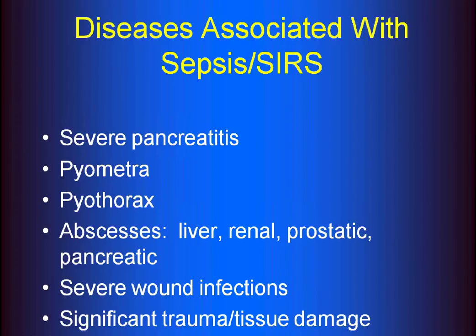And again, any wounds that are infected, significant trauma or tissue damage — early on it may not have an infection involved with the trauma, but it could progress to that. So early on you can see a SIRS situation. And basically a patient that has SIRS looks just like a patient that has sepsis. The big difference is we don't have a good antibiotic to treat the underlying cause.